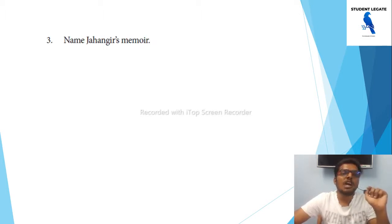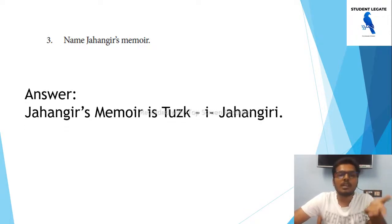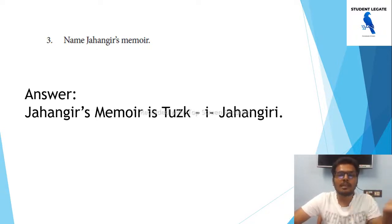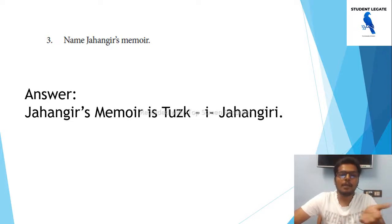Next question: What is the name of Jahangir's memoirs? The name of Jahangir's memoirs is called the autobiography of Jahangir, and the memoir is called Tuzuk-i-Jahangiri.